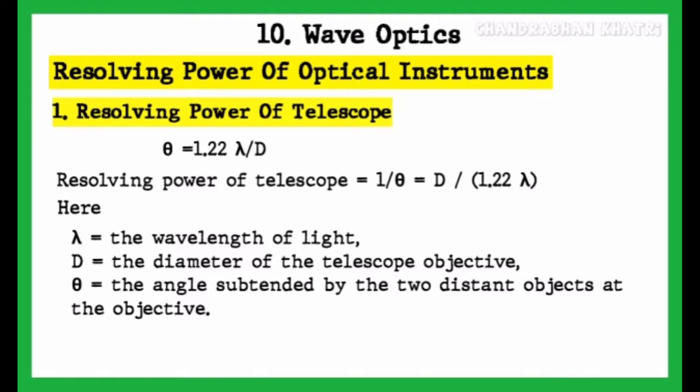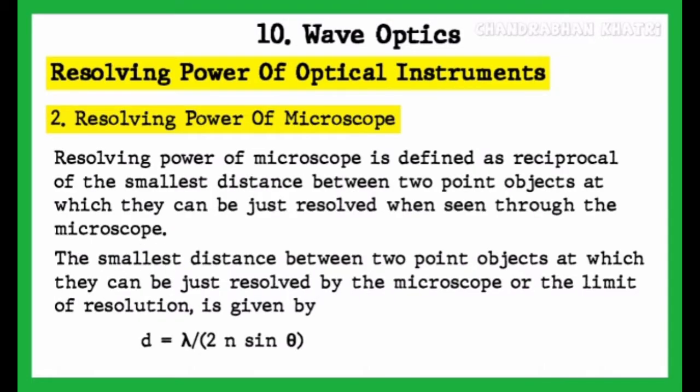Resolving power of telescope equals 1 upon theta, that is, capital D upon 1.22 lambda. Here, lambda is the wavelength of light, capital D is the diameter of the telescope objective, and theta is the angle subtended by the two distant objects at the objective.